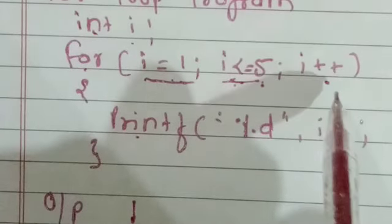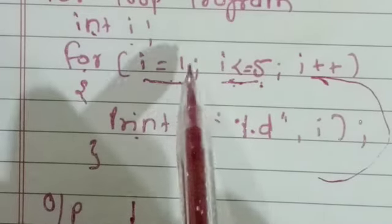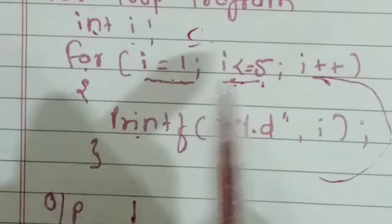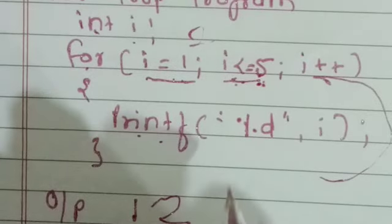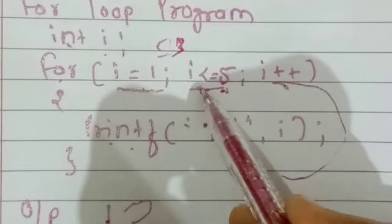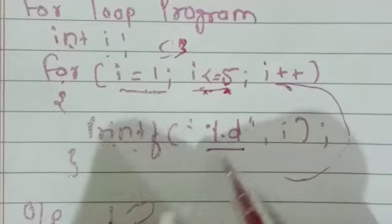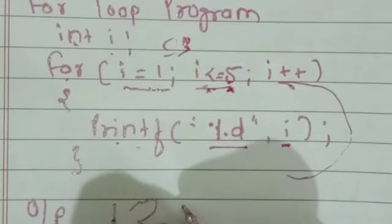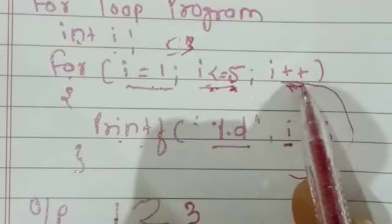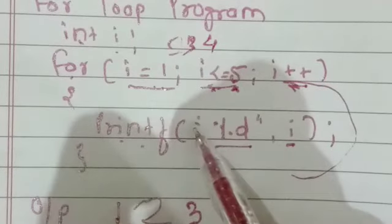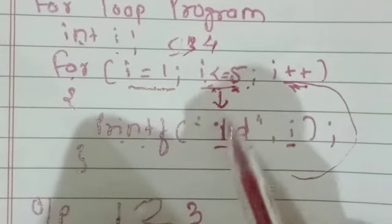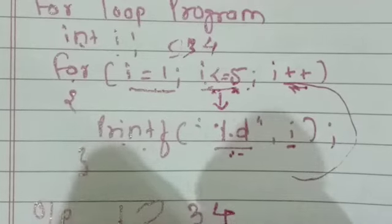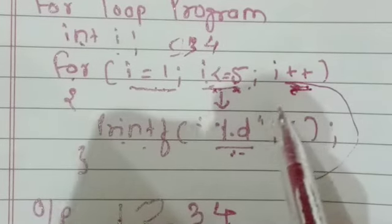Then i++ — next iteration. The value of i becomes 2. 2 less than or equals to 5 — condition true. Then i becomes 3. 3 less than or equals to 5 — condition true. Then i++ again, i becomes 4. 4 is less than or equals to 5 — condition true — the value of i, which is 4, is printed.